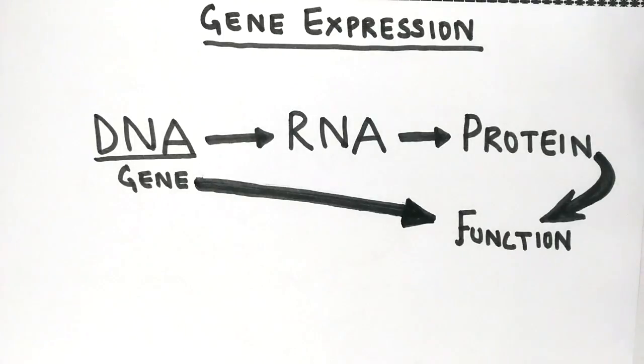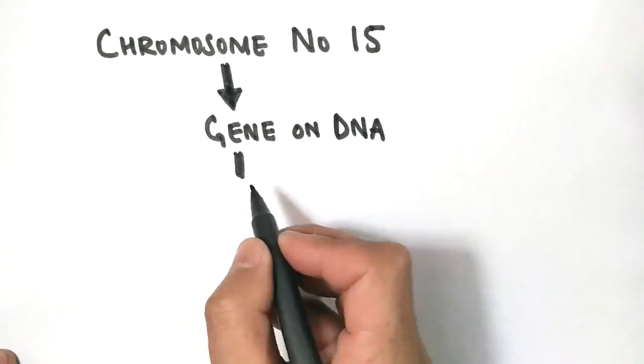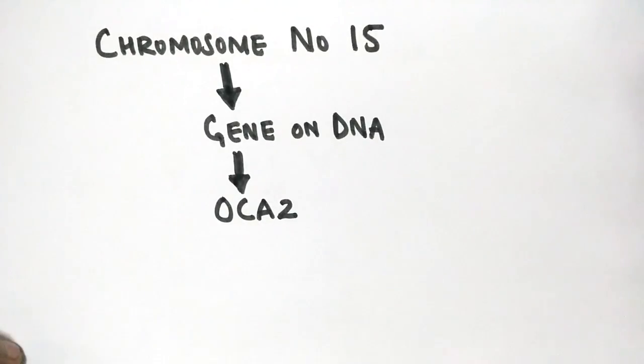Let's take an example in humans. Let's see how the gene for eye color expresses itself. The gene for eye color is present on chromosome number 15, and it's called the OCA2 gene. Why OCA2? Because mutation in the OCA2 gene causes a disease called oculocutaneous albinism 2.